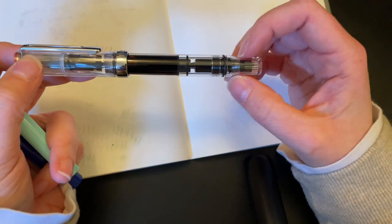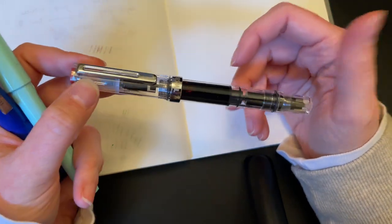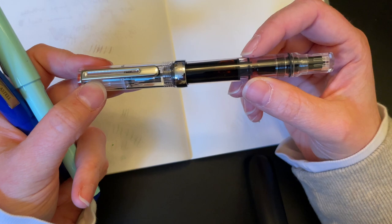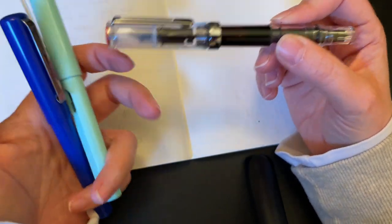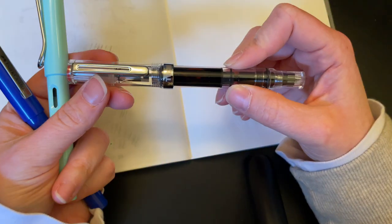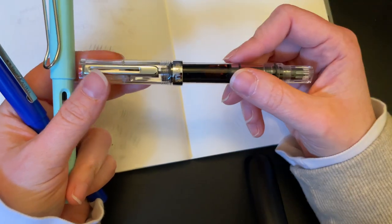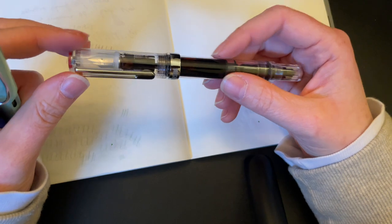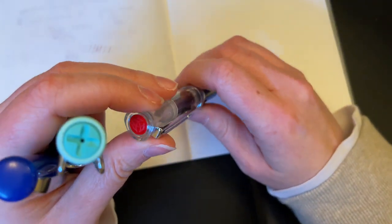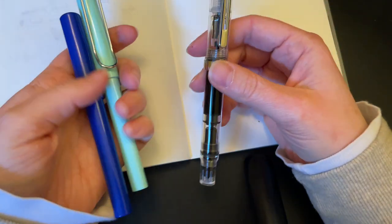The TWSBI Eco comes with everything you need - comes with the wrench and silicone grease to take this apart if you need to clean it, and of course has a built-in piston so you don't have to buy an additional cartridge or converter. But you would need bottled ink, so all of those things, but that's a fountain pen thing in general.